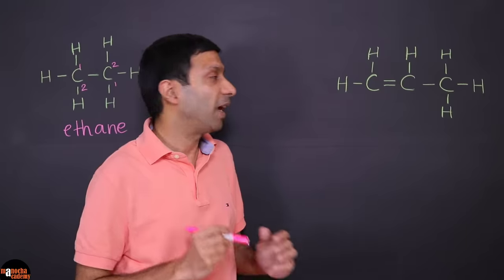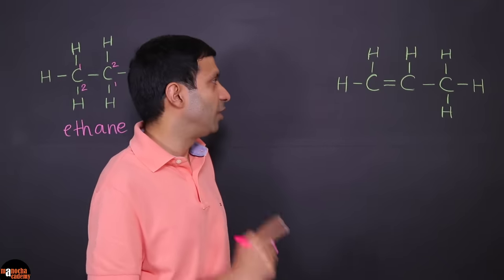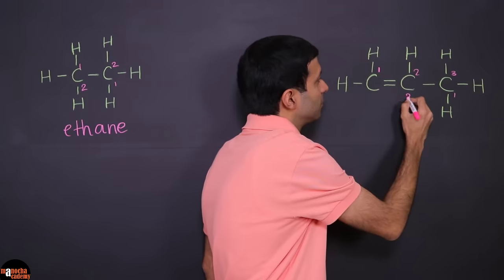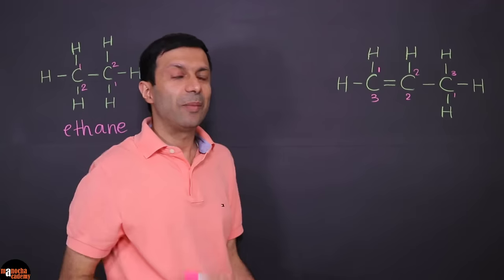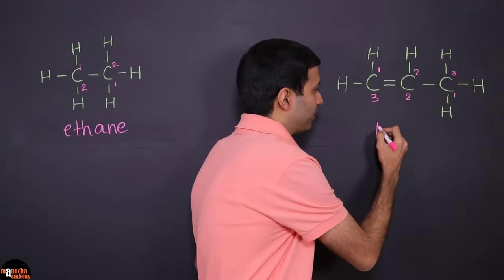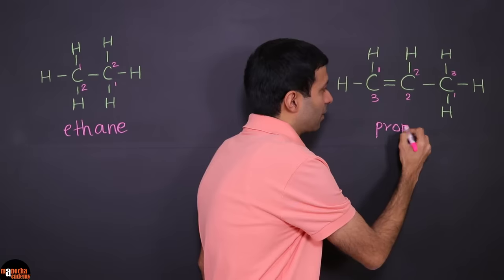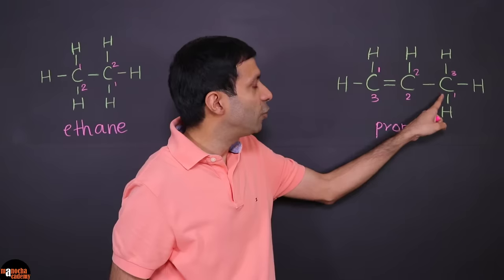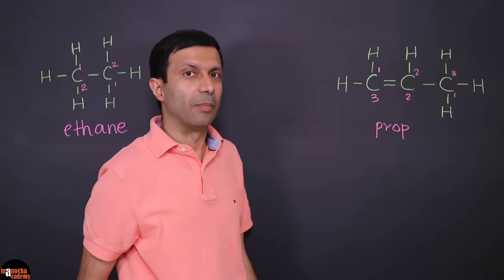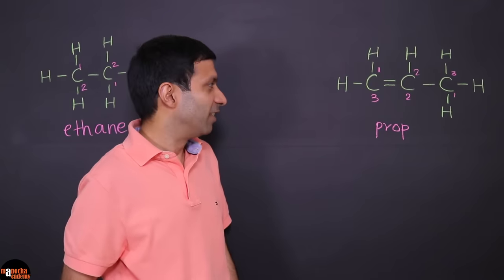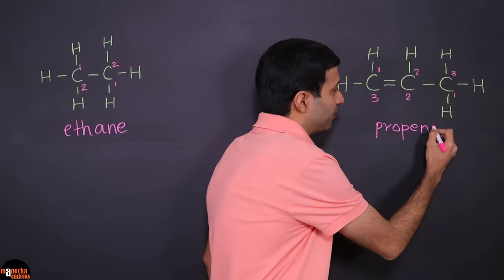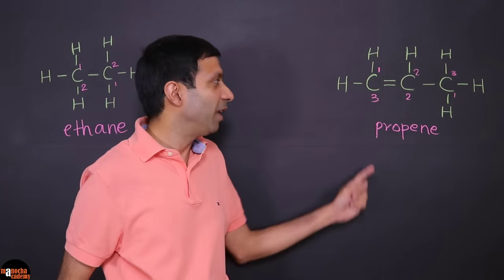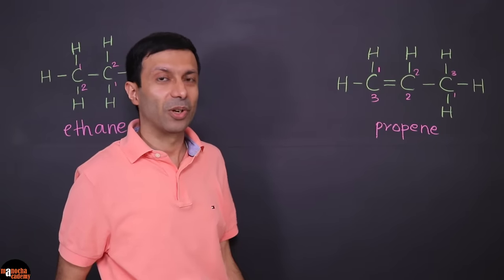Now let's apply the same rules to this example. We find the longest continuous carbon chain, which is these three carbons, and number it forward and backwards. Three carbons means the name starts with prop. But this is not propane, because there's a double bond between two of the carbon atoms, making it an alkene — so the name is propene. And if we had a triple bond instead of a double bond, the name would have been propyne.